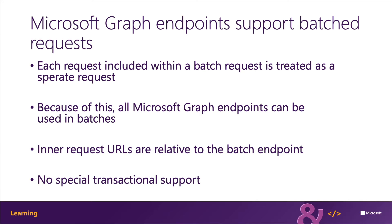One important point to keep in mind is that batching does not introduce transactional support to your group requests. Furthermore, a batch that contains five requests, for example, can have three requests succeed and two fail. These mixed results are still considered a successful batch request as the request and response aren't malformed.